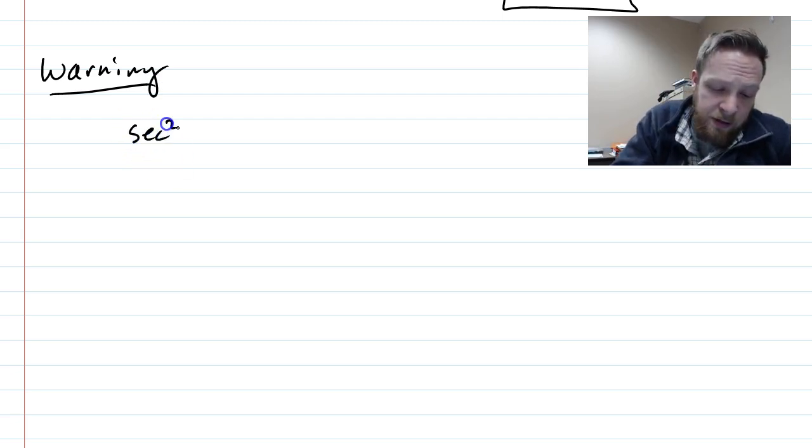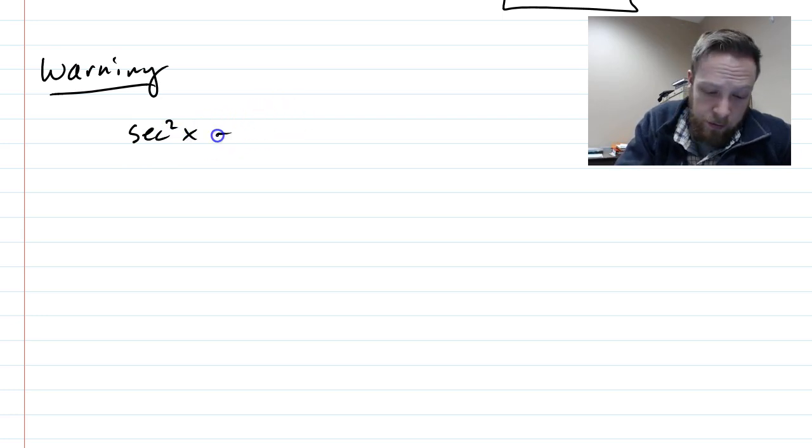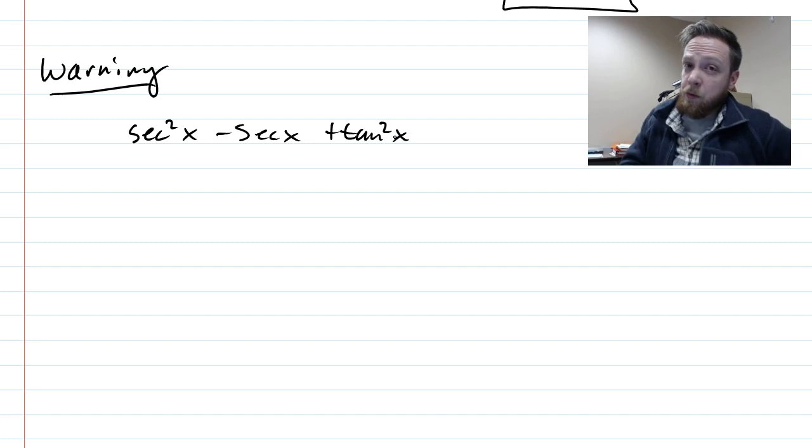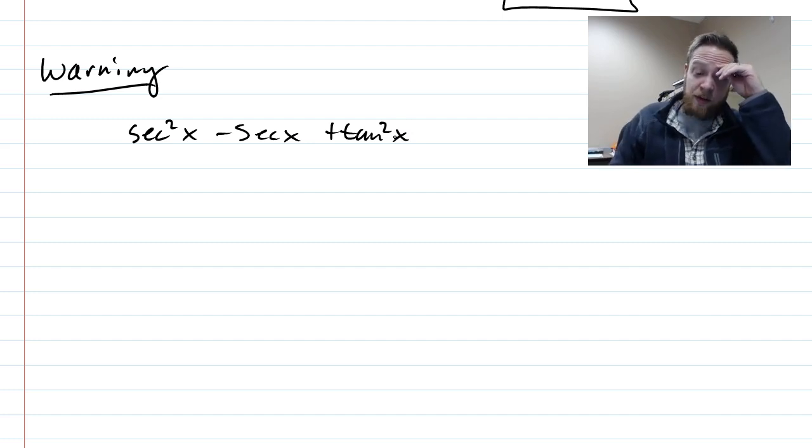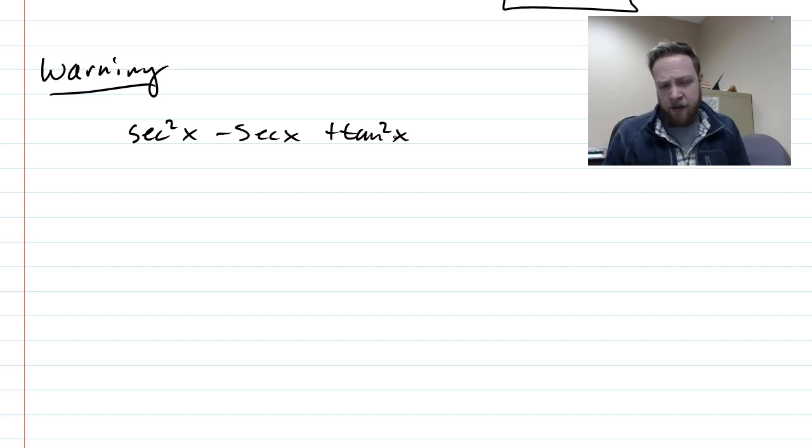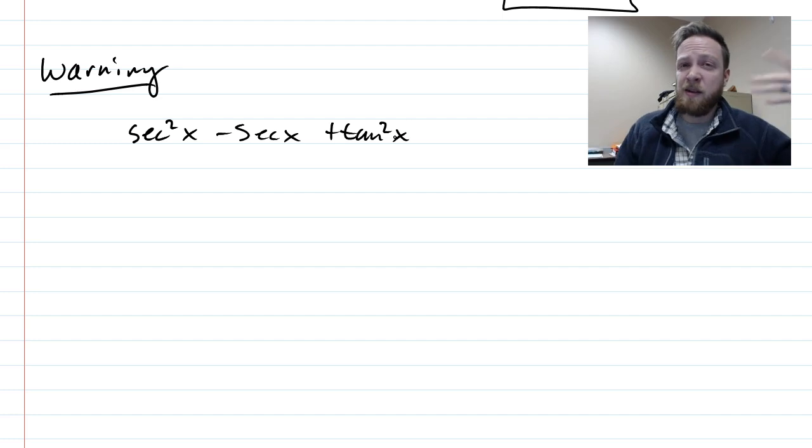So the example that I have is secant squared x minus secant x plus tan squared x. I got this from the book. And the book says that you should be factoring this. The issue is, if you start to substitute things in, you're going to end up with a squared minus a plus something else.